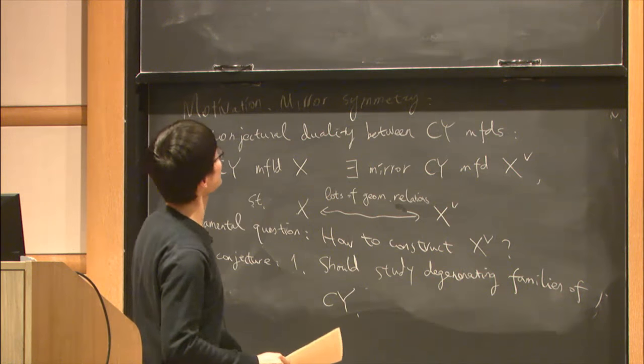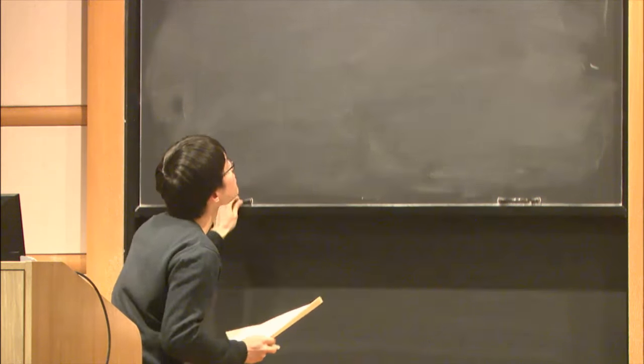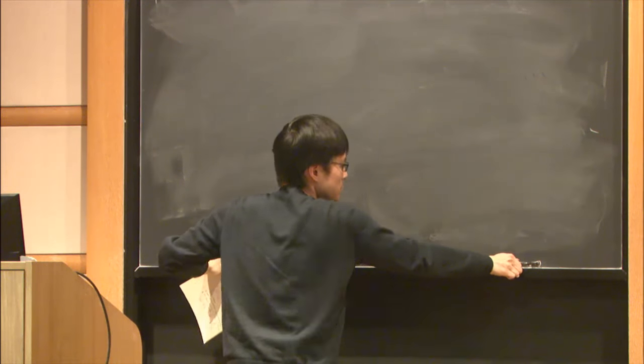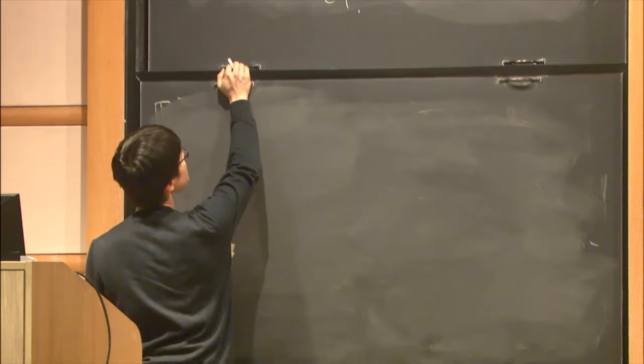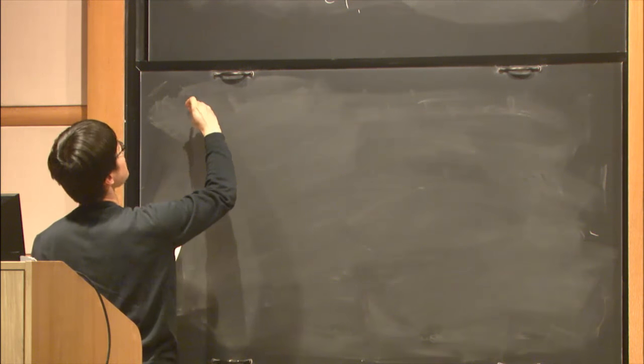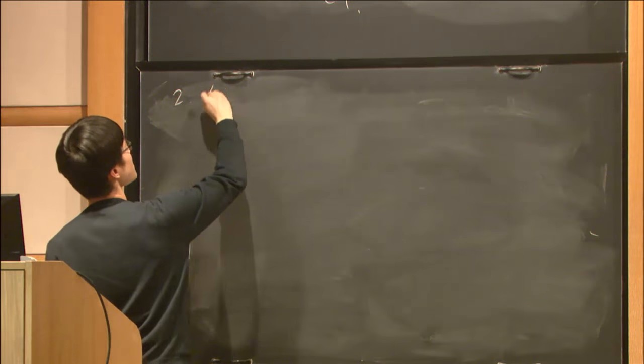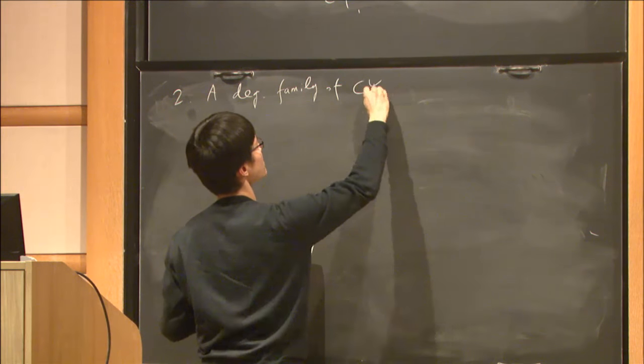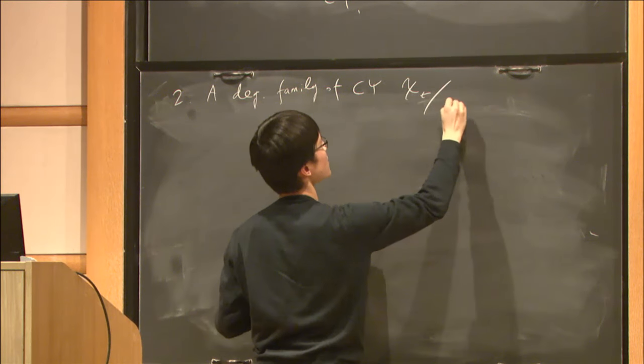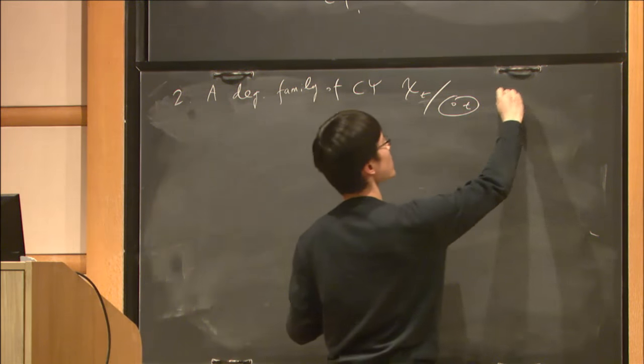Next, they conjecture that a degenerating family of Calabi-Yau manifolds, say X_T over a punctured disk parametrized by T, looks like the following.